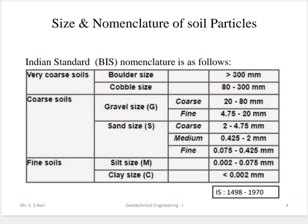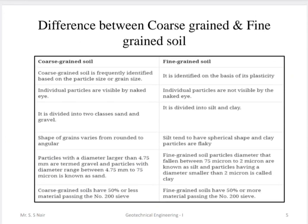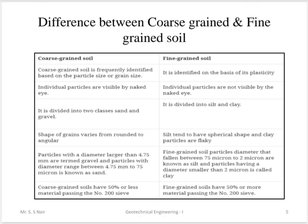Gravel is denoted by G, sand by S, silt by M, and clay by C. Coarse-grained soil is identified based on particle size, while fine-grained soil is identified based on plasticity. Individual particles are visible in coarse-grained soil but may not be visible to the naked eye in fine-grained soil. Coarse-grained is divided into gravel and sand; fine-grained into silt and clay.